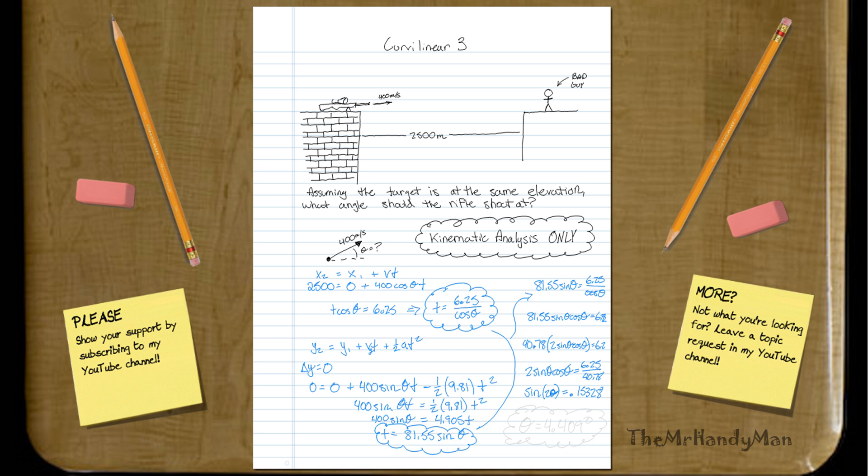And I'll let you just work through the algebra yourself, but theta will equal 4.409 degrees. So kind of interesting. He was actually aiming 4.409 degrees higher than he was supposed to, just to account for gravity itself.